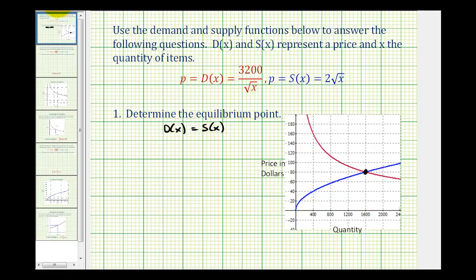So we'll have 3,200 divided by square root x must equal 2 square root x. I'm going to put this over 1. And now that we have a proportion, we can cross multiply and then solve for x. So we'll have square root x times 2 square root x, that's 2x, must equal 3,200 times 1. So we have 3,200 and now we'll just divide by 2.